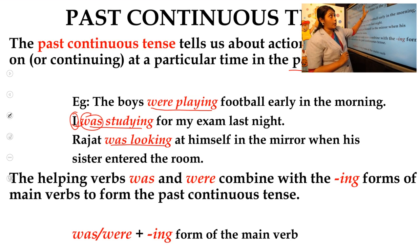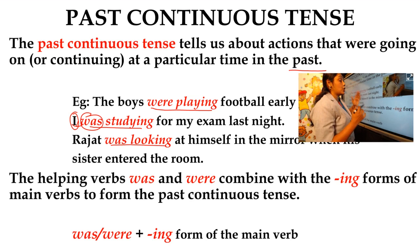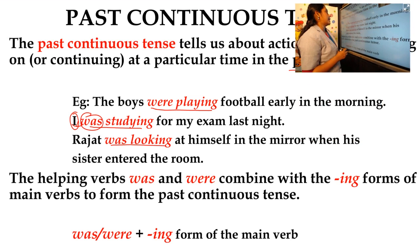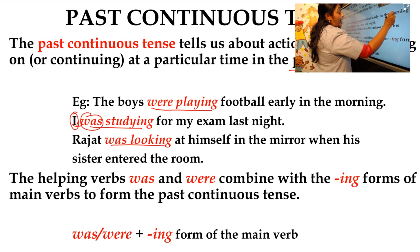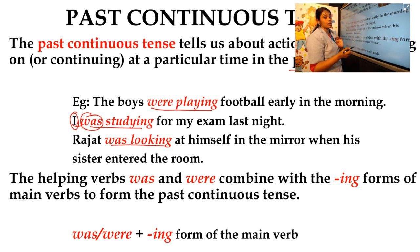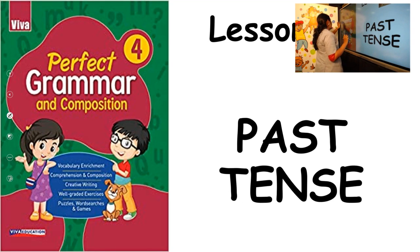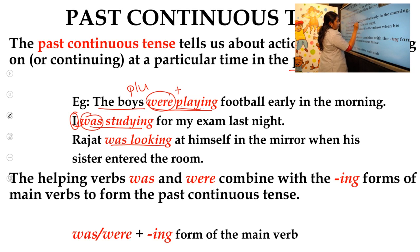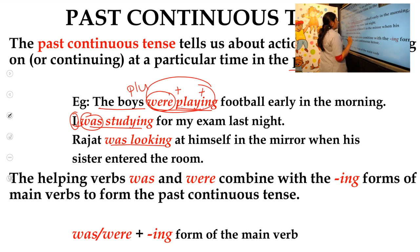So, to summarize: the past continuous tense tells us about actions that were going on or continuing at a particular time in the past. For example, 'The boys were playing football early in the morning.' We used 'were playing' because 'boys' is a plural noun. So the rule is: were plus the main verb plus ing form — 'were playing'. This is past continuous tense.